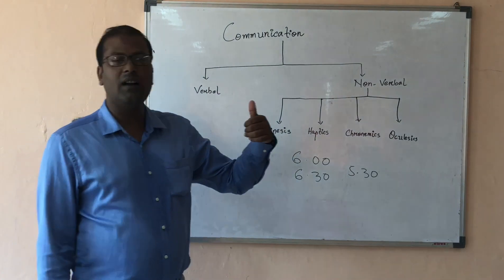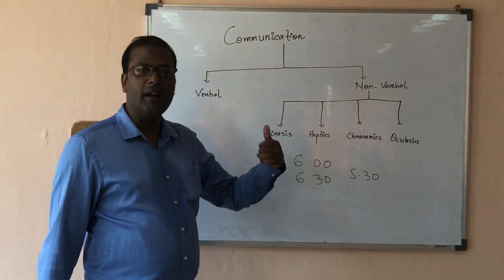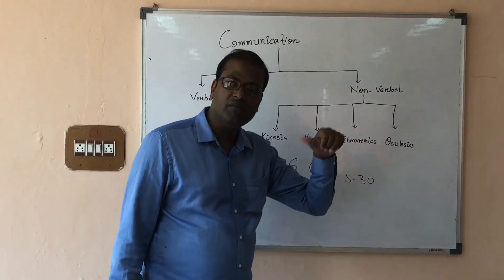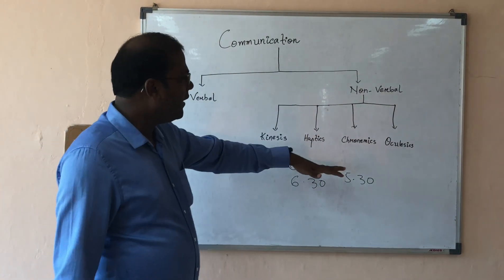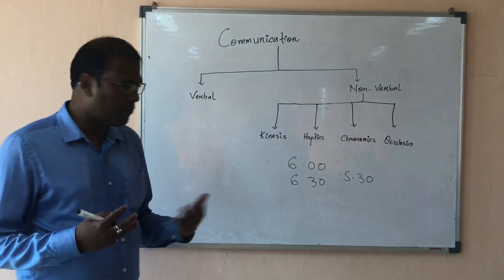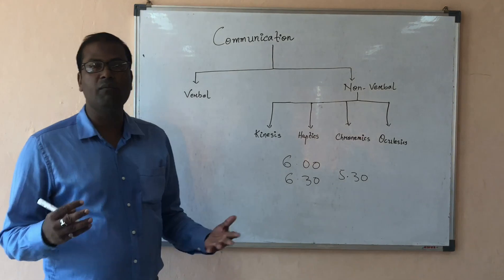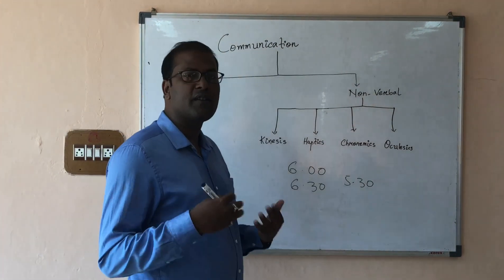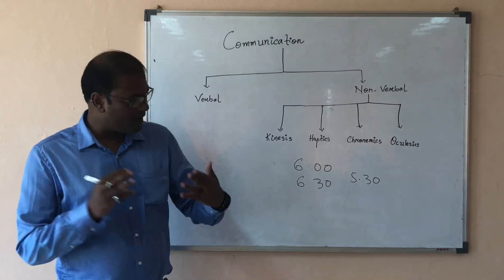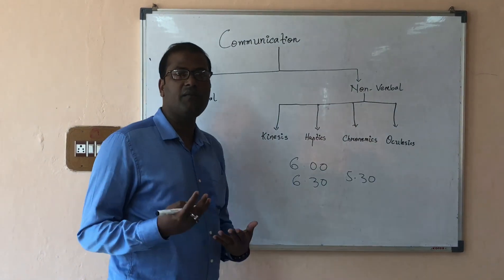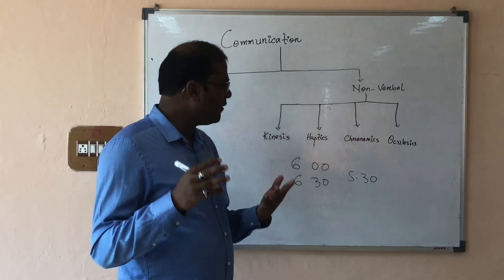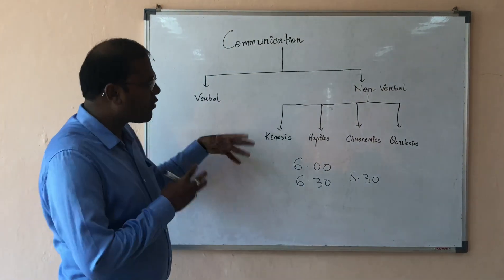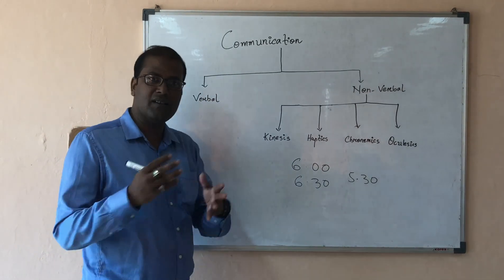In different cultures, body language has different meanings. For example, showing a thumbs up — in Middle Eastern cultures like Korea, Japan, and India, this indicates 'all the best,' but in some cultures it is seen as a defiant gesture. Eye contact is also culture specific. In Japan, looking down when communicating to someone superior is respectful, whereas looking directly into someone's eyes is considered rude. In American culture, the reverse is true — looking directly is expected.